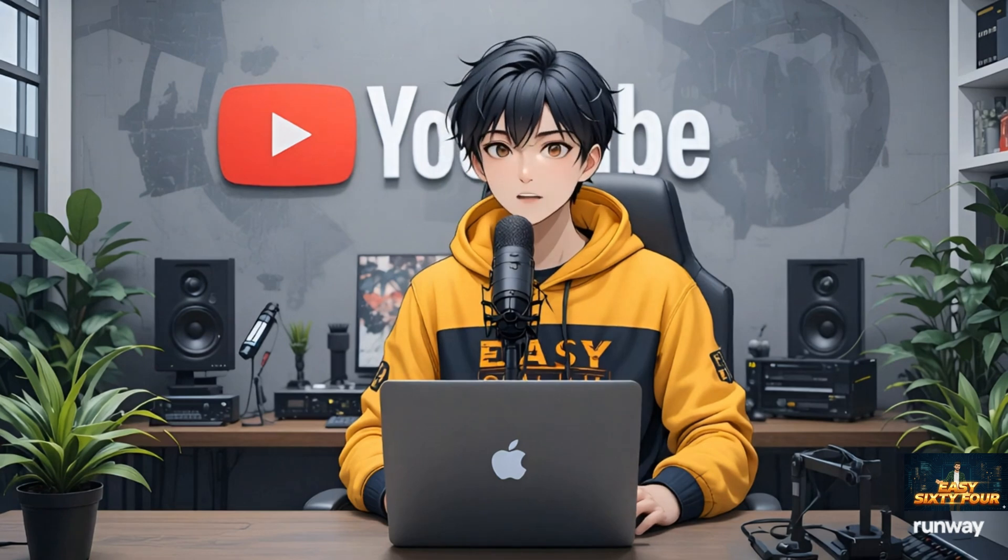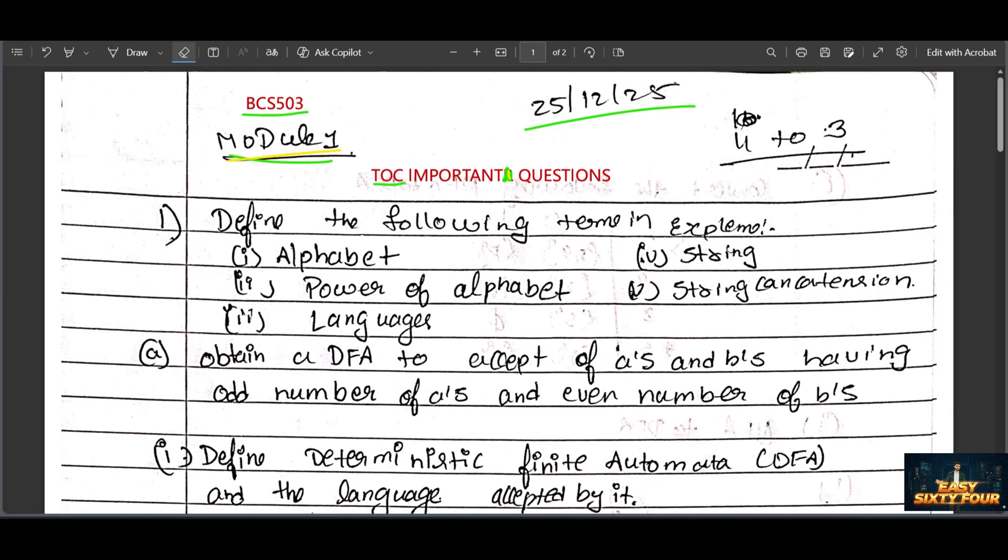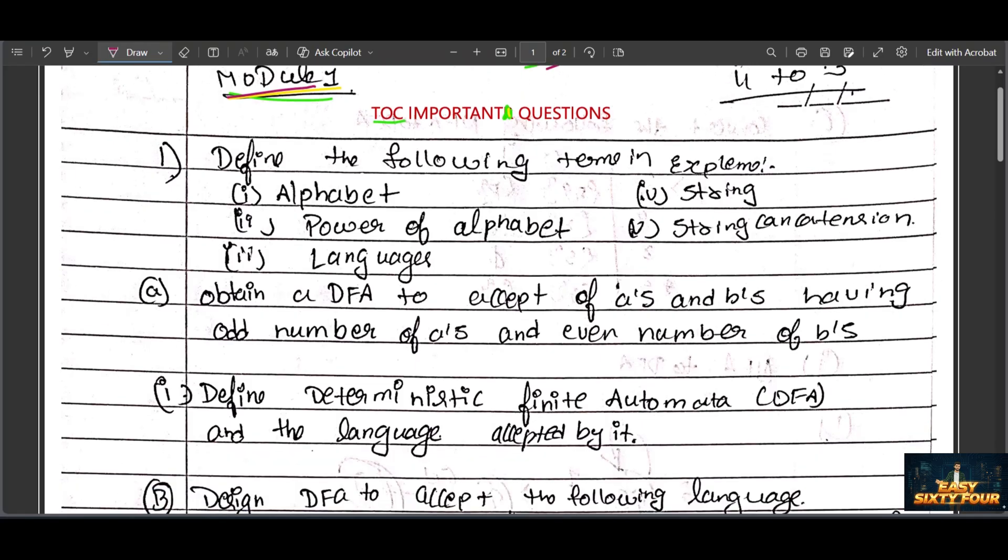Welcome back to my YouTube channel, Engineering 64. Today we are going to discuss Module 1 for Theory of Computation, subject code BCS503. Let's complete Module 1 today because it's a little tougher compared to Module 5. Module 1 has so many theory questions, unlike Module 5 which only has two or three.